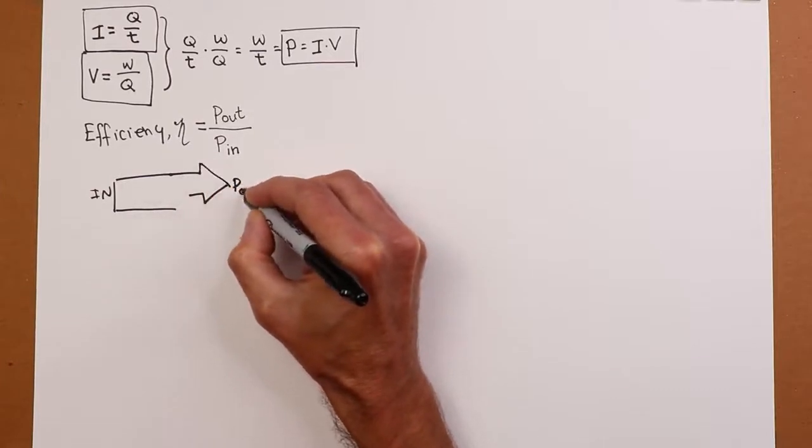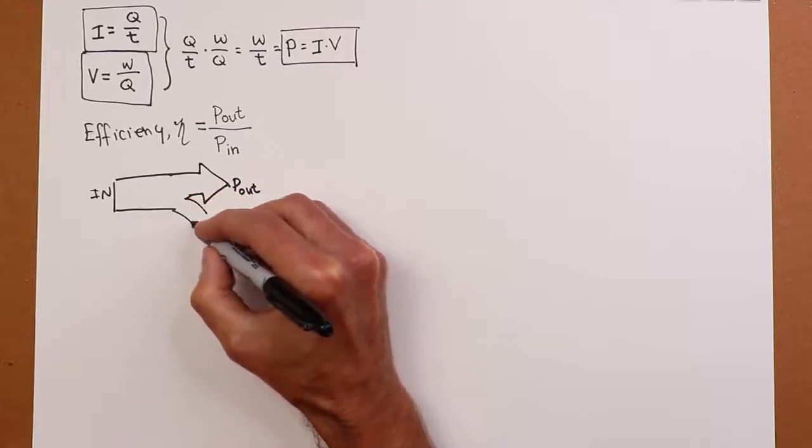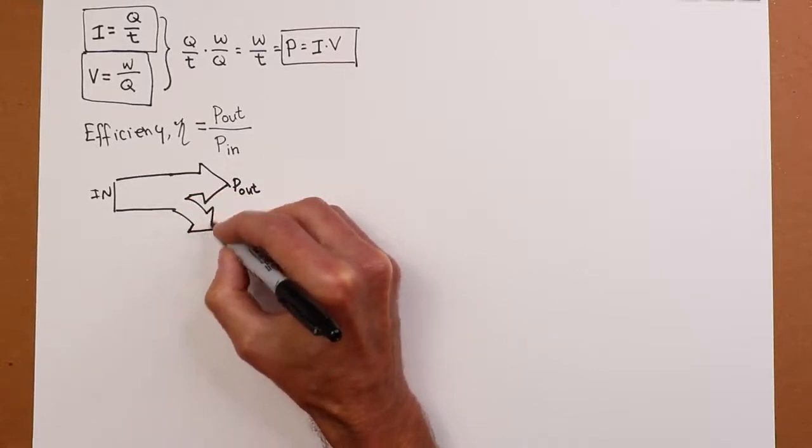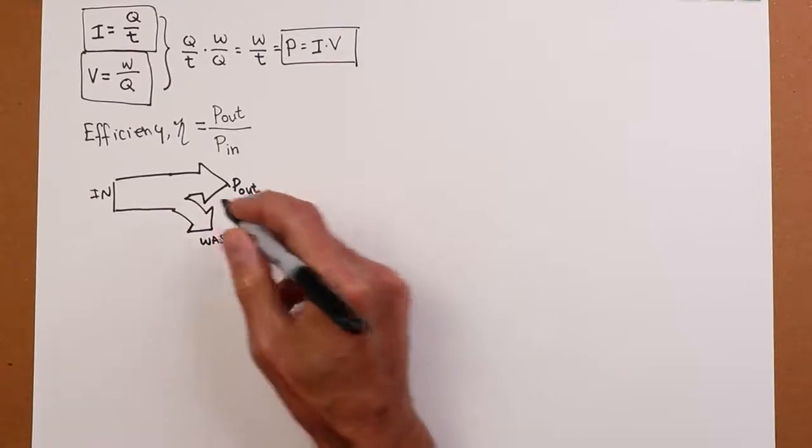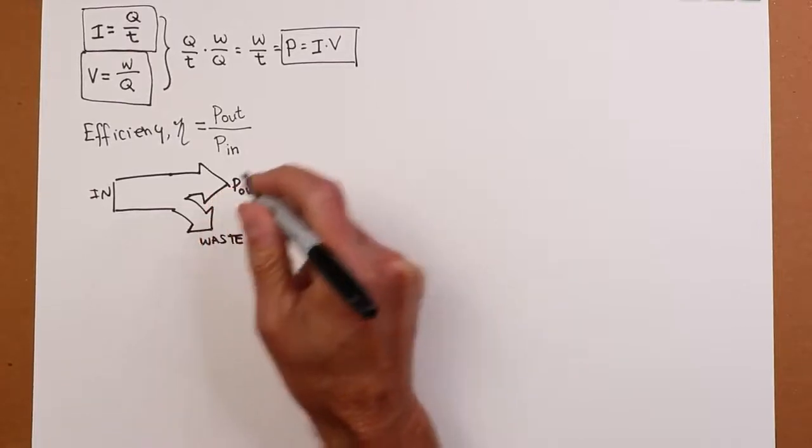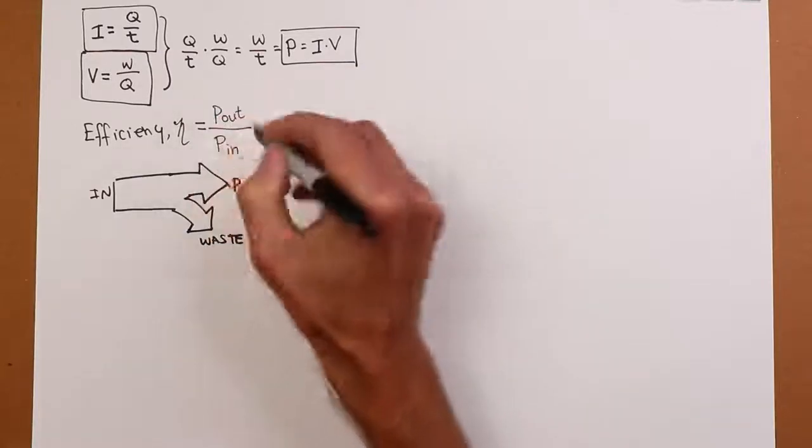You can increase your useful output power. And then this extra piece kind of peels off out here. This is the waste. So you want to minimize this. Minimum waste, maximize the amount that you get for P out. So bigger efficiency is better.